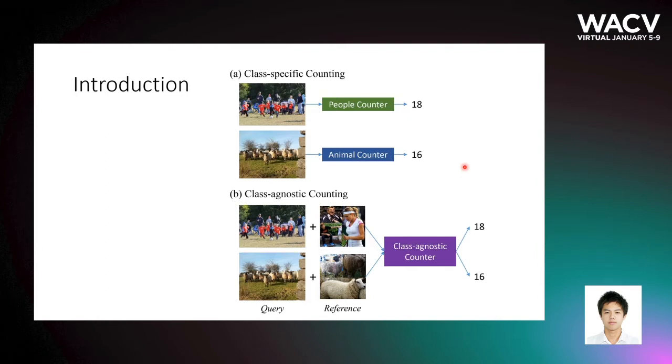To achieve the class agnostic manner, we cast the counting problem into a matching problem. In order to force the model learning the class independent feature, so that in the testing stage, the model can generalize to such unseen objects.